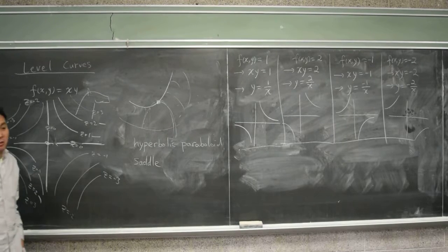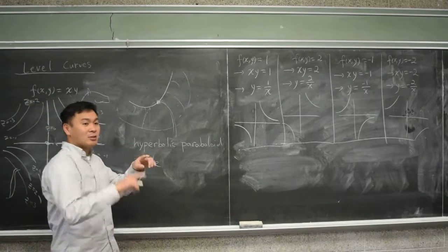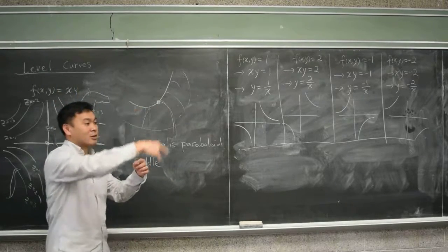A saddle point is... It's like a point where if you cut it in one direction, it's like a maximum. If you cut it in another direction, it's like a minimum.